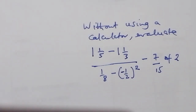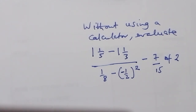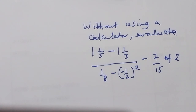Without using a calculator, evaluate 1 and 1 over 5 minus 1 and 1 over 3, all over 1 over 8 minus into bracket negative 1 over 2 power 2, minus 7 over 15 over 2.